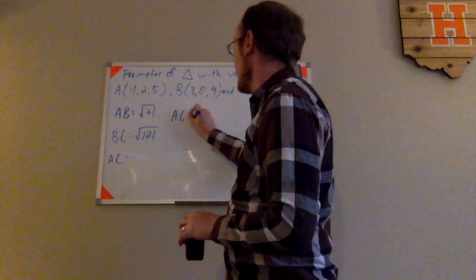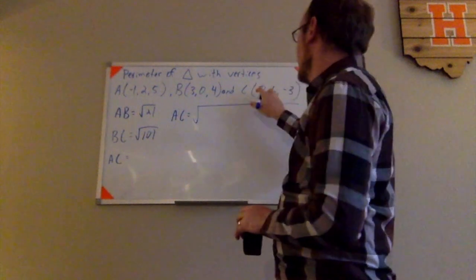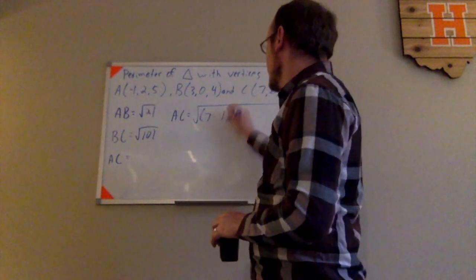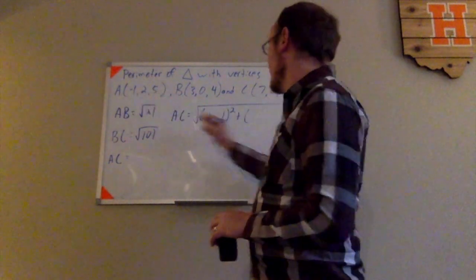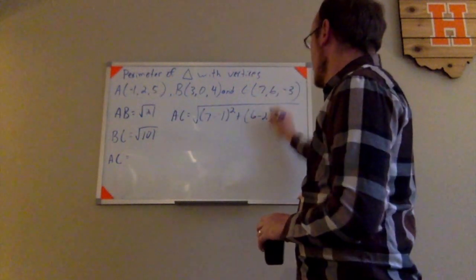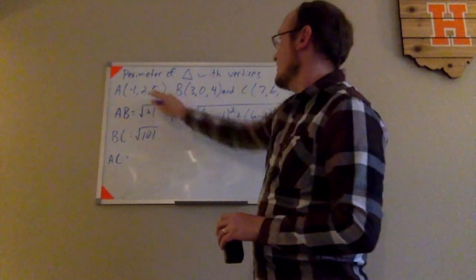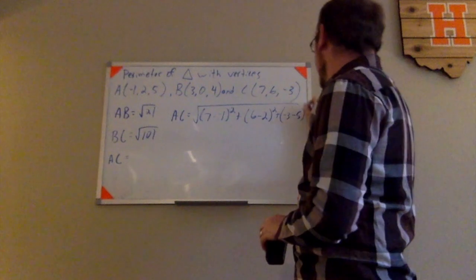AC is going to be equal to (7 - (-1))² plus (6 - 2)². And finally, the Z is (-3 - 5)².